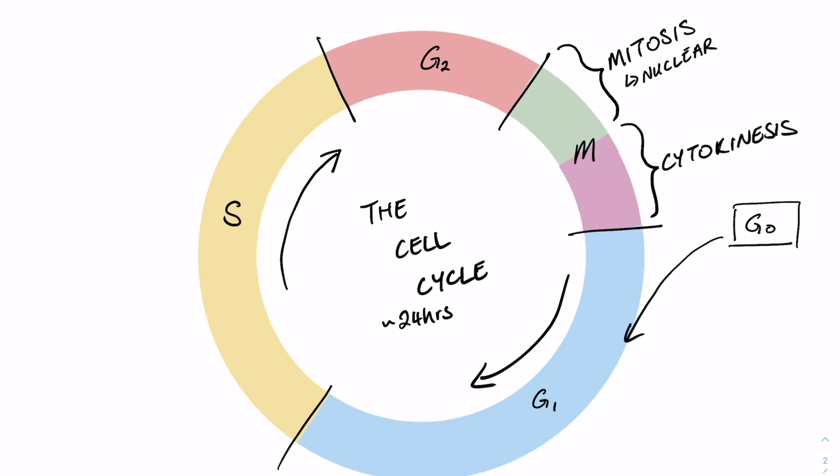Mitosis describes the process of nuclear division, while cytokinesis, cyto meaning cell and kinesis meaning movement, is the process describing cellular division.